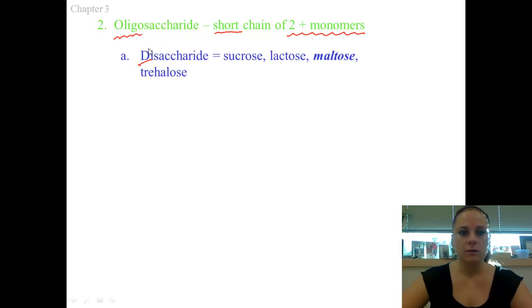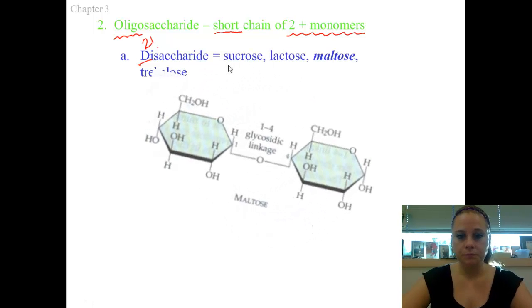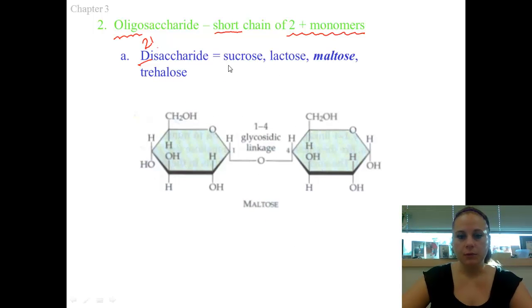Di means two, so if I have a disaccharide that means I have a molecule made up of two monosaccharides. Examples of this are like sucrose, which is your table sugar, lactose, milk sugar, maltose, malt sugar, and so on.